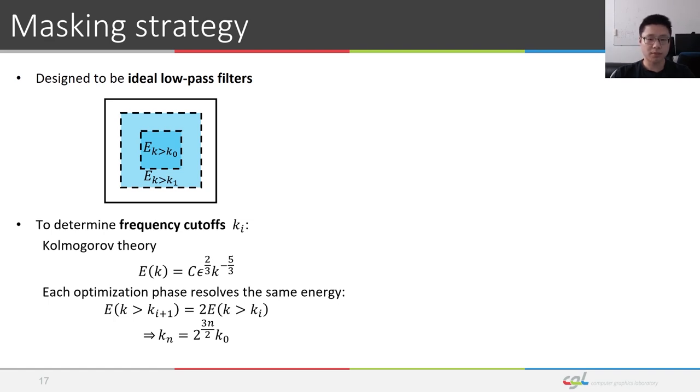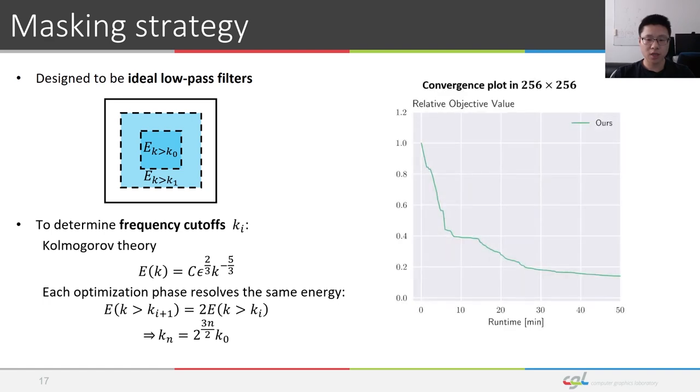During the optimization process, when the objective enters the plateau and its relative change is lower than the threshold, the optimization automatically switches to the next band. This typically results in a sudden decrease in the convergence plot, which helps a lot with the convergence of our method.